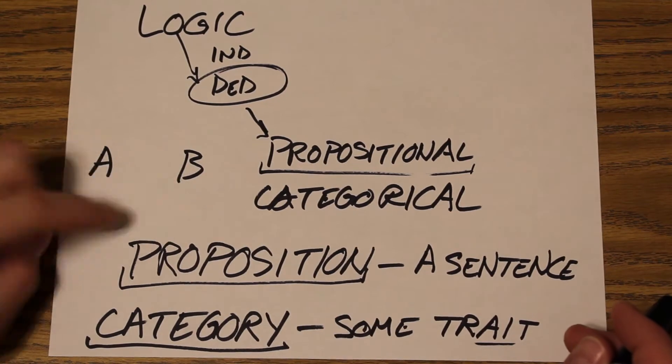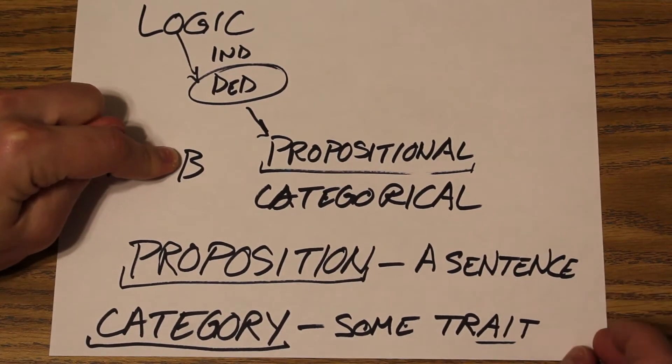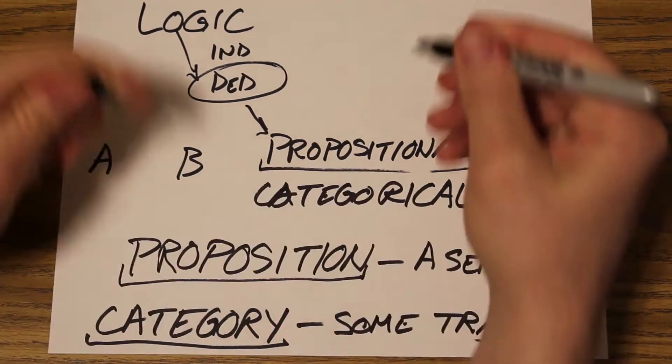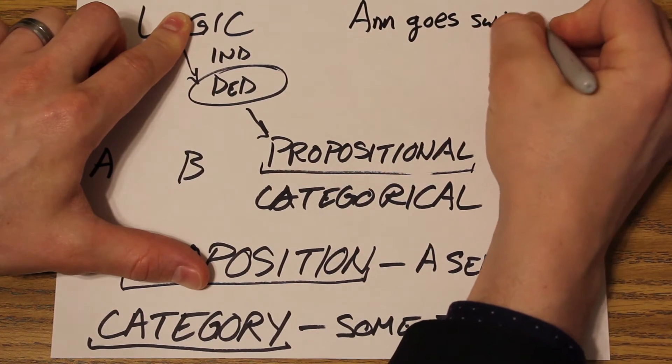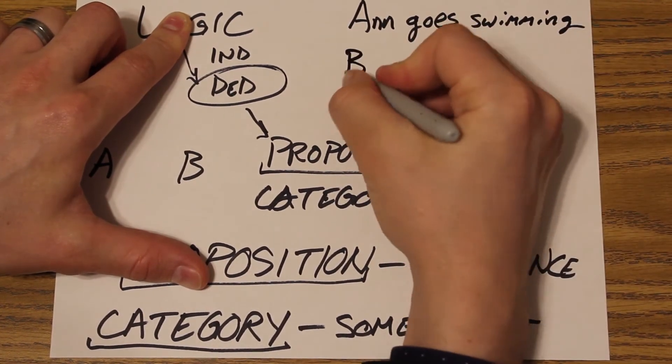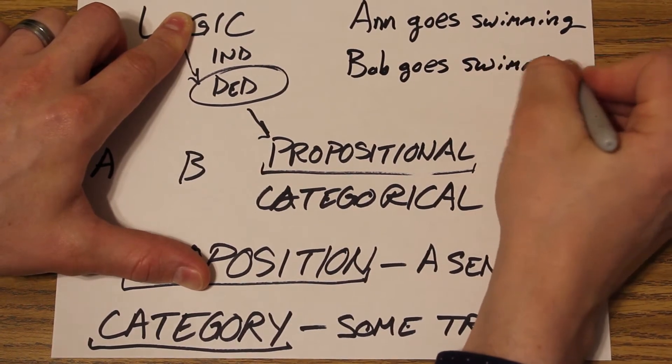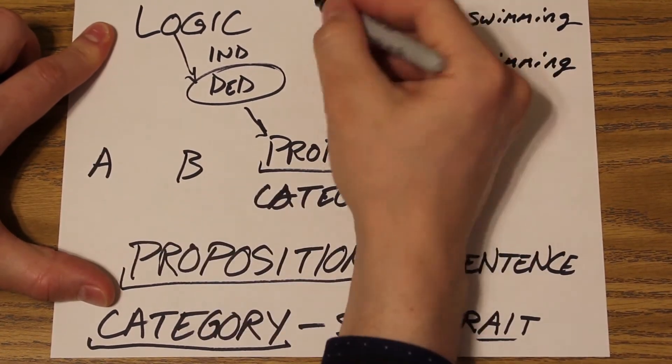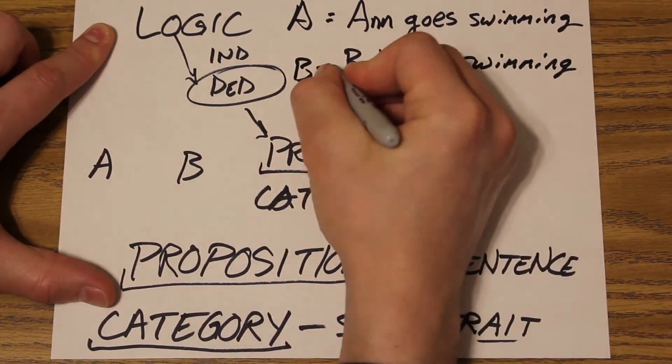So there's some kind of connection between the two. And then from there, you could go on to connect B to something else. So let's say A is Ann goes swimming. It's a standalone sentence there. B, let's say it's Bob goes swimming. Again, another standalone sentence. So A is the whole sentence here and B is the whole sentence.